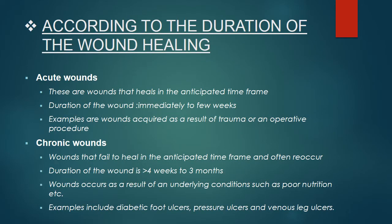According to duration of wound healing: acute wounds heal in the anticipated time frame, typically within two weeks to a few weeks. Examples are wounds acquired as a result of trauma or an operative procedure. Chronic wounds fail to heal in the anticipated time frame and often reoccur; their duration is more than four weeks to three months. They occur as a result of underlying conditions such as poor nutrition. Examples include diabetic foot ulcers, pressure ulcers, and venous leg ulcers.